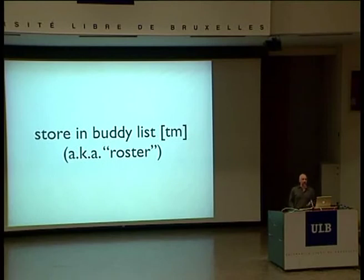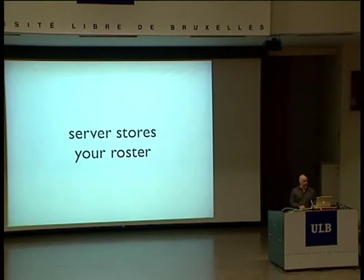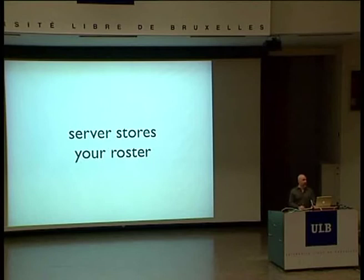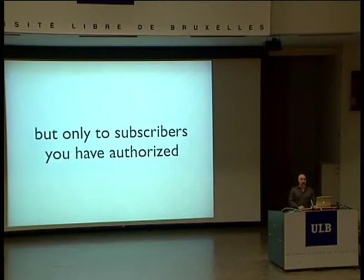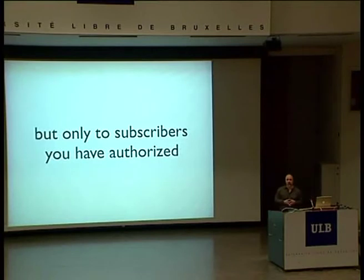These all get stored in your roster — we call it a roster in Jabber, not a buddy list, which is an AOL trademark. The server stores your roster so that when you connect via various clients, it's all there for you. The server broadcasts your presence or availability. But the server only sends this to people who are authorized. Some consumer IM systems give your presence away to anyone, which is really not a good idea. The server also must not expose your IP address like IRC does.